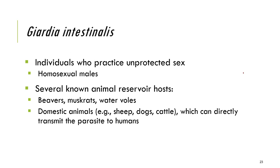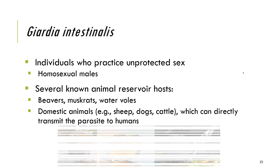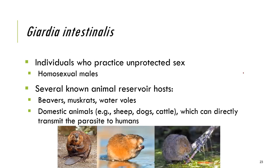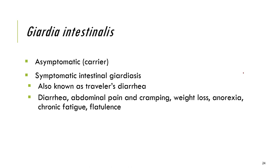Reservoir hosts include beavers, muskrats, water voles, and domestic animals such as sheep, dogs, and cattle. Those at risk include children in daycare centers, individuals in areas with poor sanitation, and travelers who drink water from unknown endemic areas — which is why Giardia lamblia is associated with 'traveler's diarrhea.' Giardia intestinalis can be asymptomatic, but it is pathogenic.